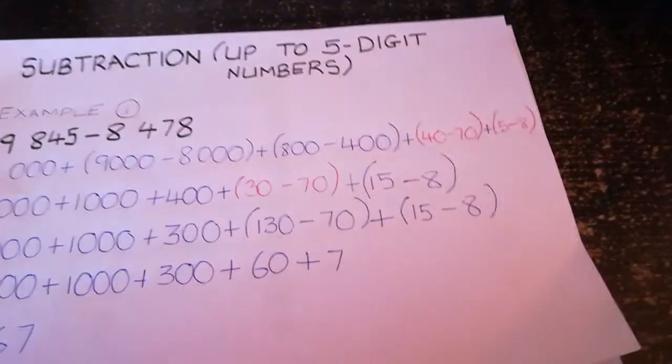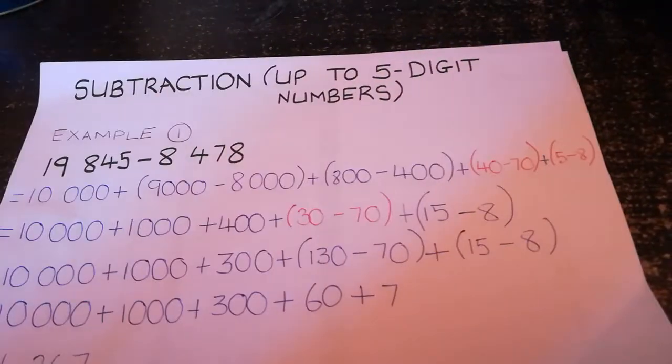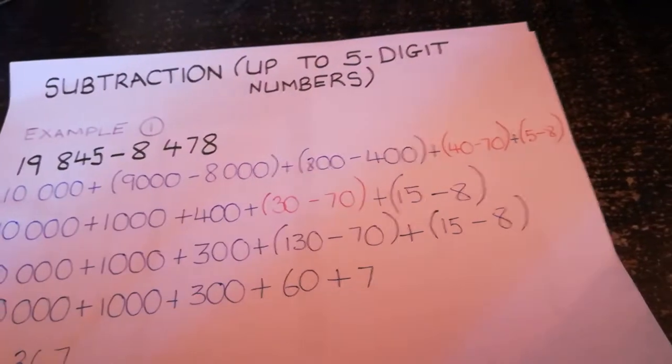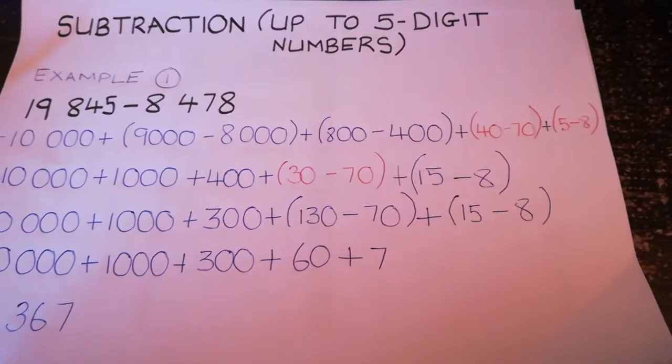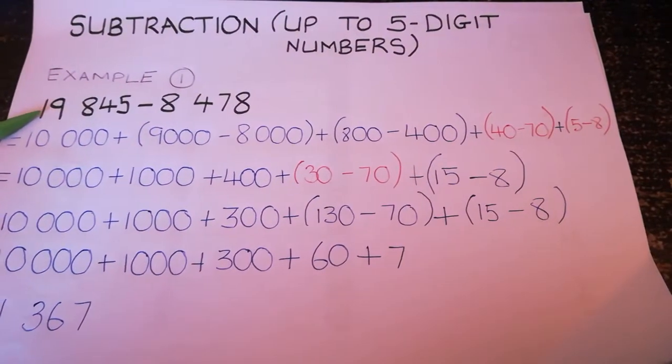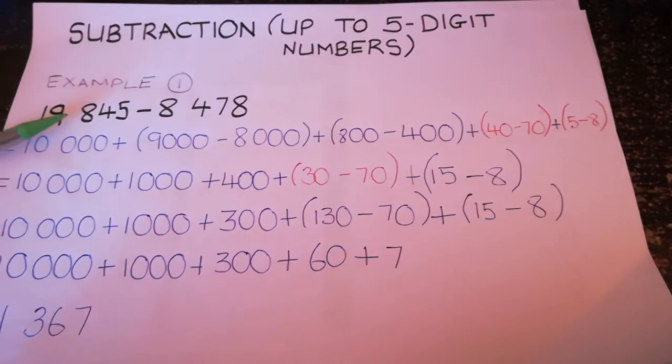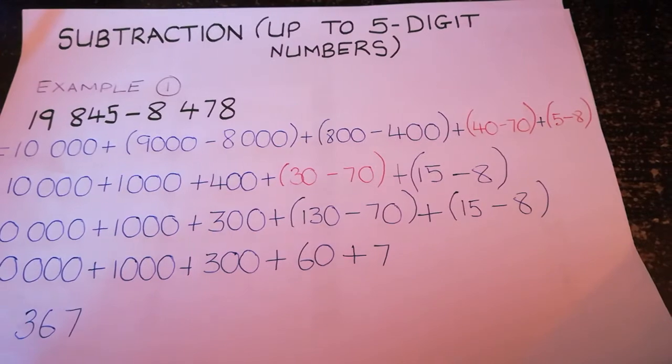Assalamualaikum grade 5. Today our topic is subtraction up to 5-digit numbers. I'm going to show you how to do this step by step. Just follow with me. Here in our example we have 19,845 minus 8,478.